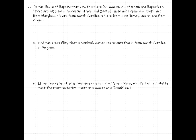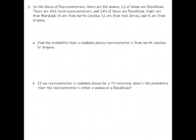In part A, find the probability that a randomly chosen representative is from North Carolina or Virginia. In part B, if one representative is randomly chosen for a TV interview, what's the probability that the representative is either a woman or a Republican? The first keyword that jumps out is the word 'or' — North Carolina or Virginia, and in part B, a woman or a Republican.